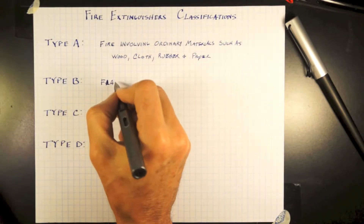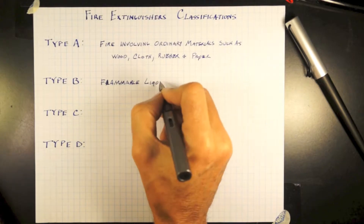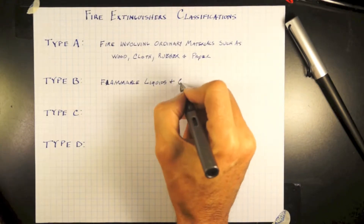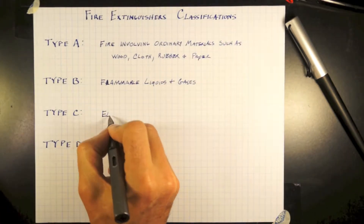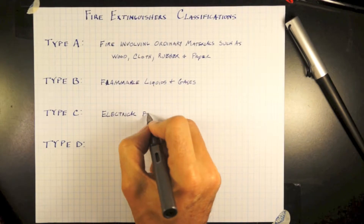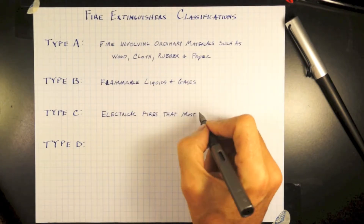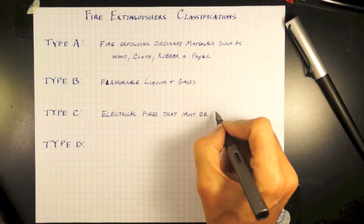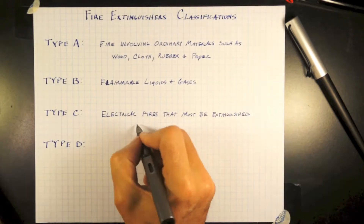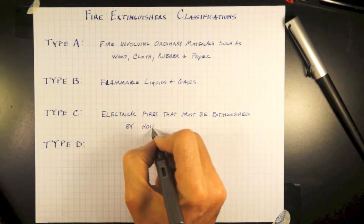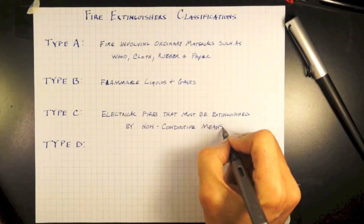Type B fire extinguishers are for flammable liquids and gases. Type C deals with electrical fires that must be extinguished by non-conductive means — i.e., water is not a good thing to put on electricity.